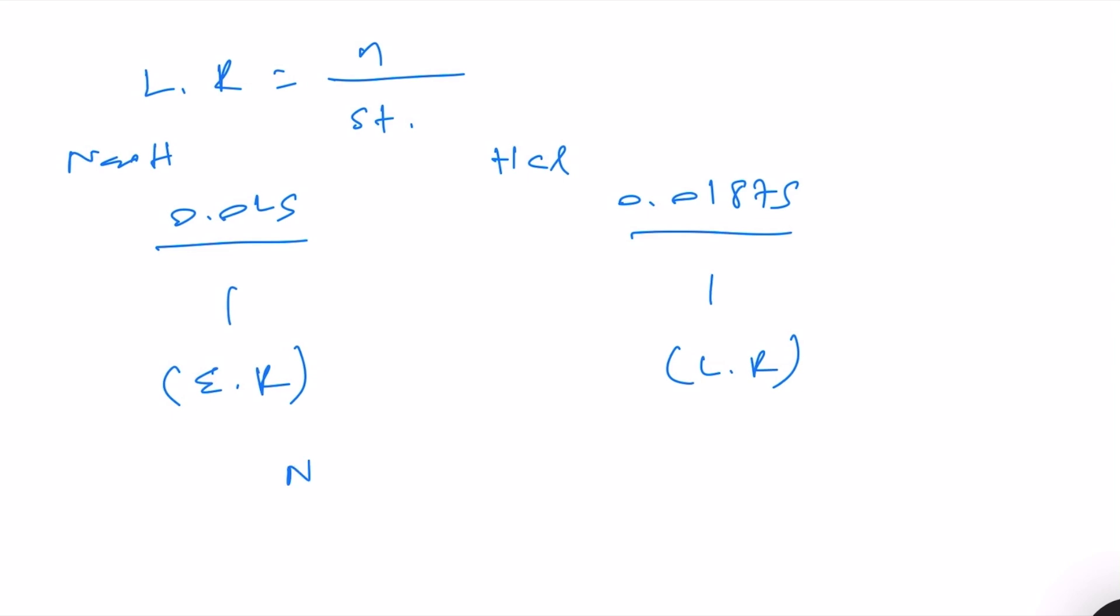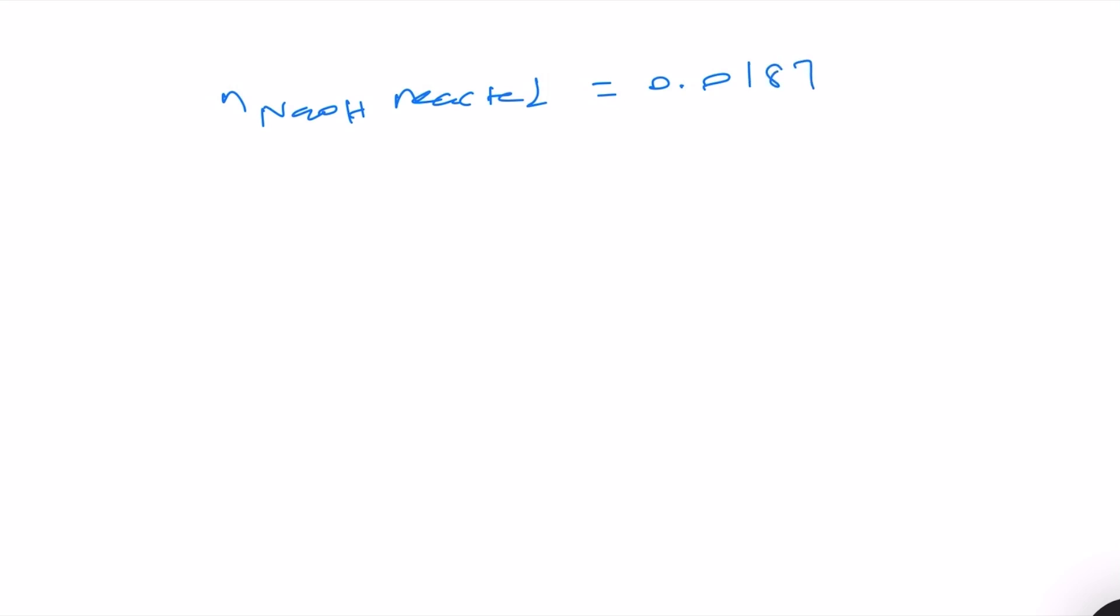The number of NaOH reacted we can equate to the number of HCl and this means the number of NaOH reacted is equal to 0.01875 moles.